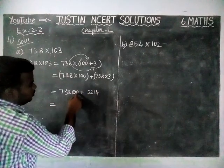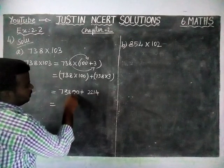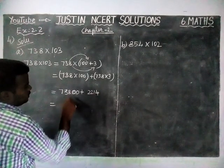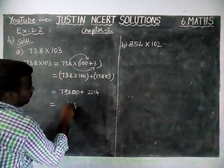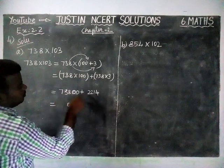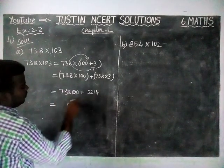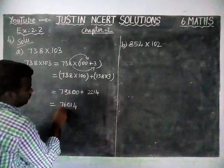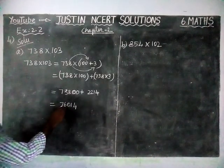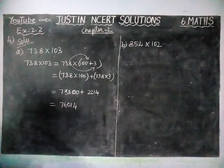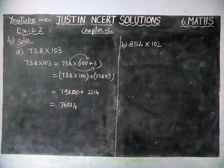So the result of 738 into 3 gives digits: ones place 4, tens place 1, hundreds place 8 plus 2 equals 10 carry 1, thousands place 3 plus 2 plus 1 is 6, ten-thousands place 7. So 738 into 3 is 2,214. Adding 73,800 plus 2,214 gives 76,014, which is the answer for option (a).